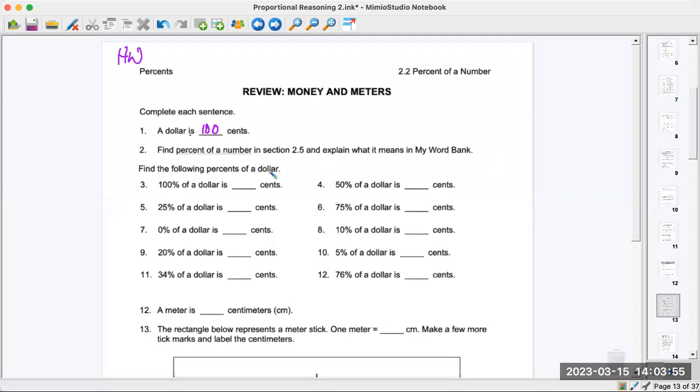Find the following percents of a dollar. I'm just going to give you one item here. 10% of a dollar is 10 cents, so these are really easy. You just put in the cents. 25% of a dollar is 25 cents. Very easy.